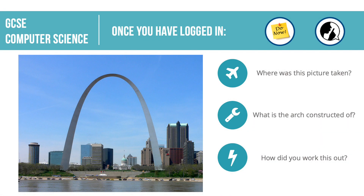Hello and welcome to this lesson in the OCR GCSE Computer Science series. This is the first lesson of Unit 2 which looks at computational thinking. Before we start there are three questions to think about: where was that picture taken, what is the arch constructed of, and how you work that out. Have a quick look on the internet and see what you can find out — this will link into the different programming skills we look at later on today.